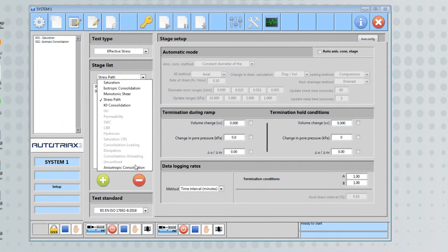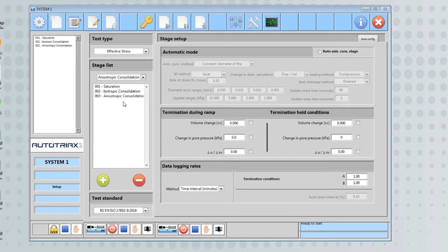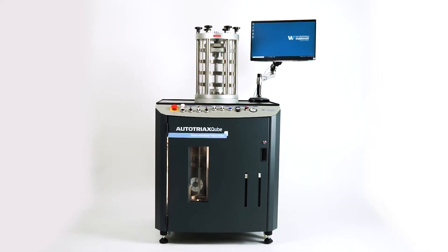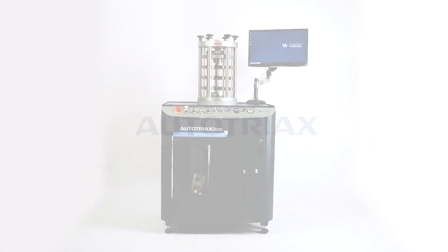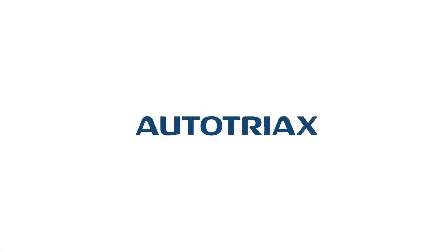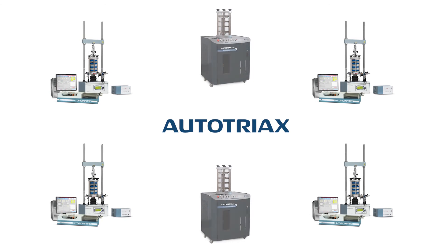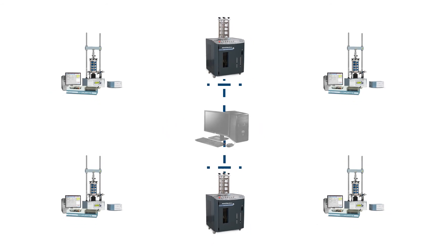The user-friendly software and PC allow the operator to control and manage all phases of testing over a fast Ethernet connection. If you already use our AutoTriax software as part of your existing system, there's no need to invest in any additional software, as the AutoTriax Cube can easily be integrated and controlled as an independent system by your existing PC and software.